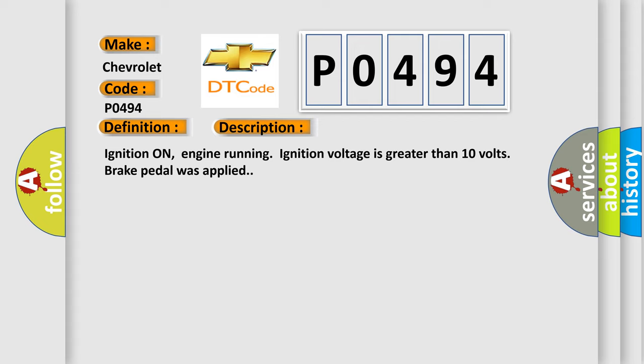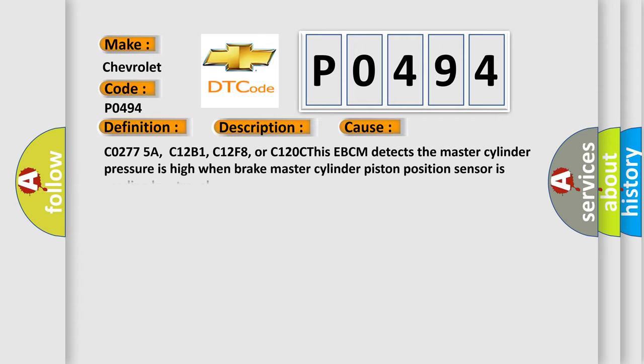This diagnostic error occurs most often in these cases: C0277SA, C12B1, C12F8, or C120C. This EBCM detects the master cylinder pressure is high when brake master cylinder piston position sensor is reading low travel.